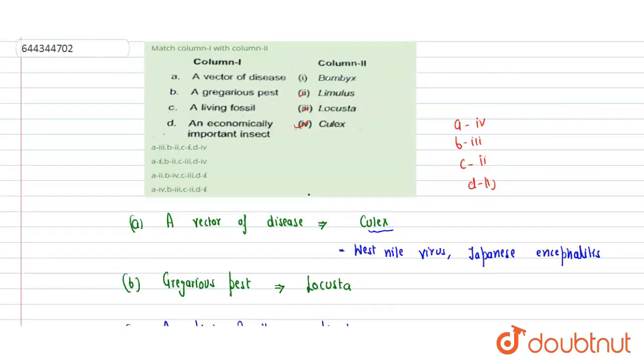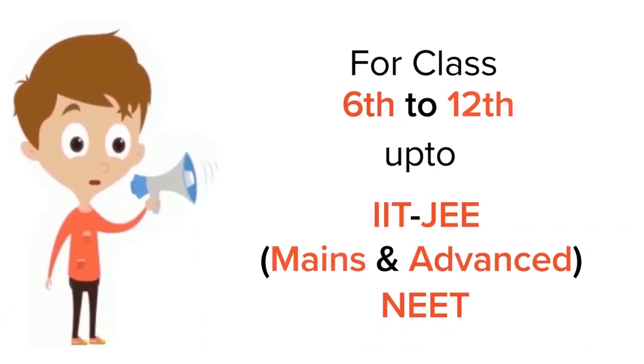So the correct match is d-1. Let's see the options. Option a-third is wrong. Option a-first is wrong. Option a-second is wrong. Option a-fourth, so a is fourth. We'll check others also: b-third correct, c-second correct, and d-first. So the correct match is option d.